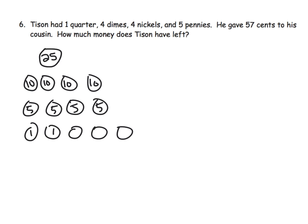Let's see what we can count in order: 25, 35, 45, 55, 65, 70, 75, 80, 85, 86, 87, 88, 89, 90. So one way to figure it out is to count in order the way we were taught in a previous video.